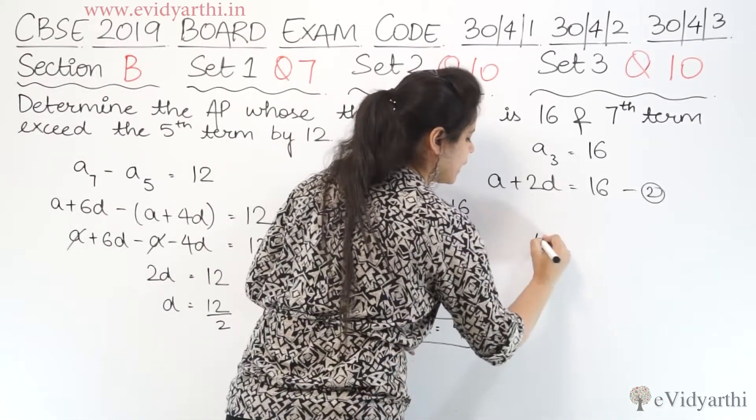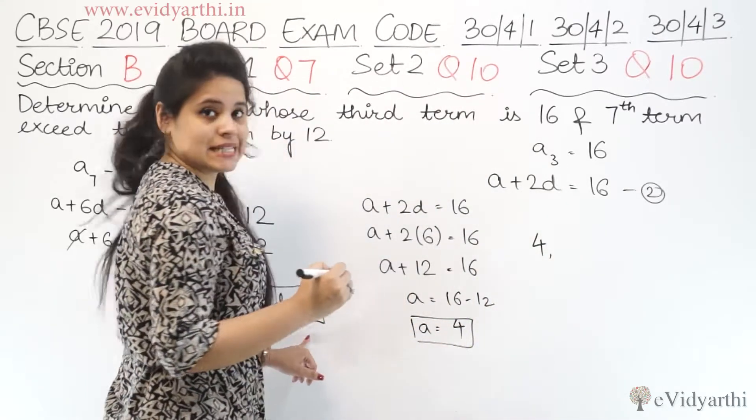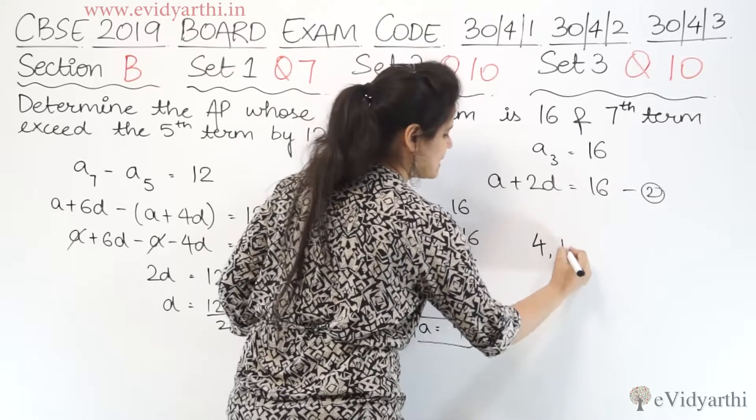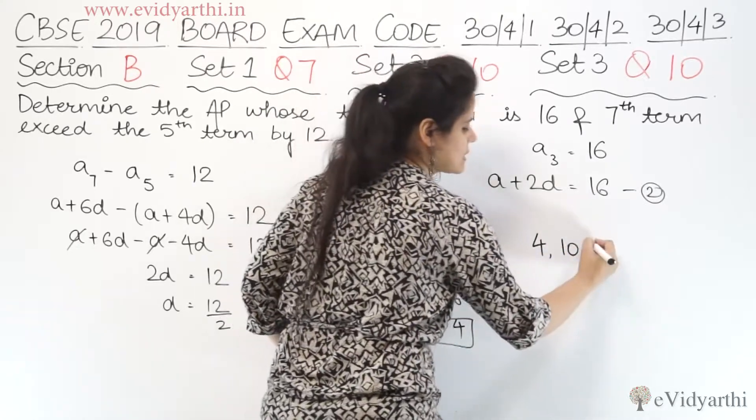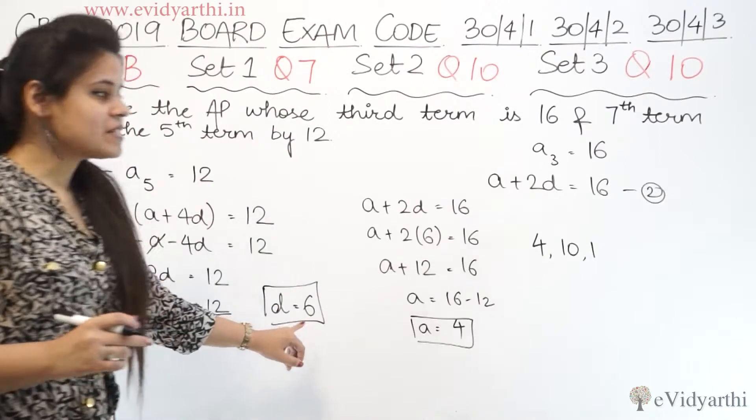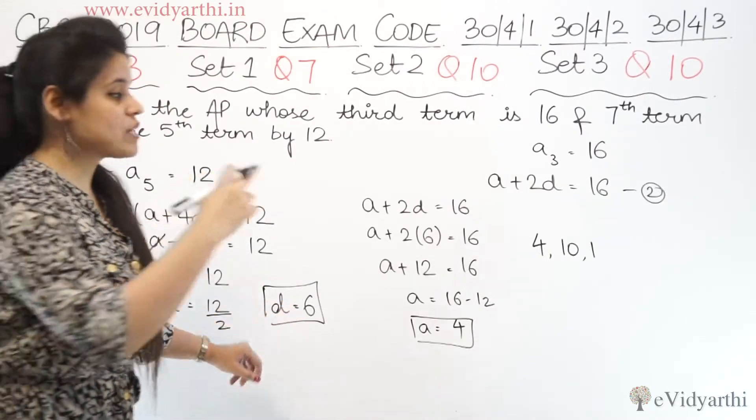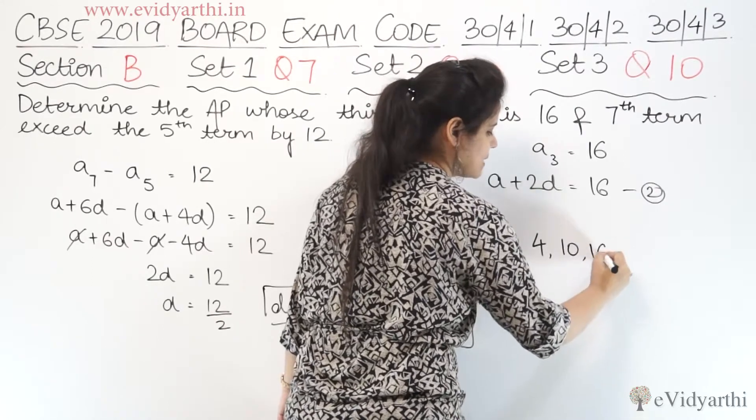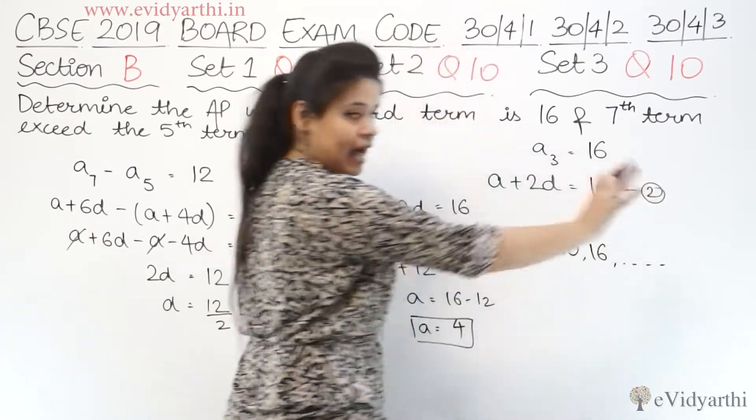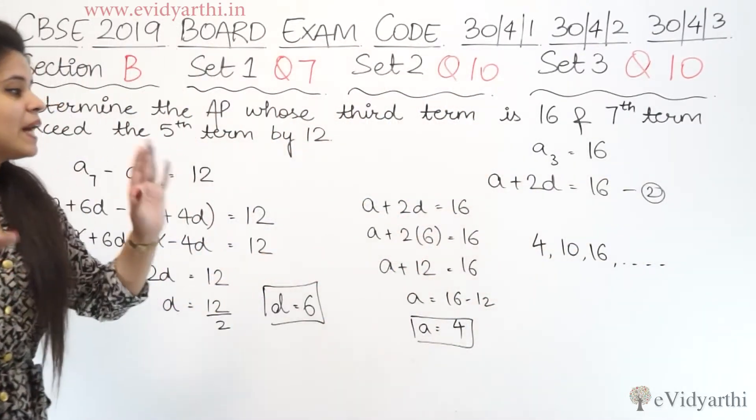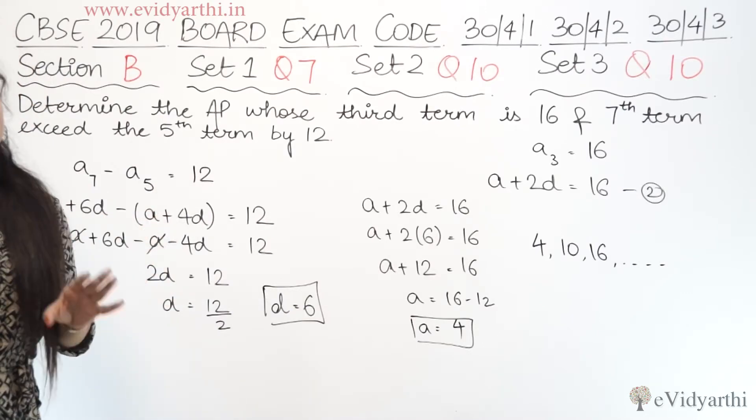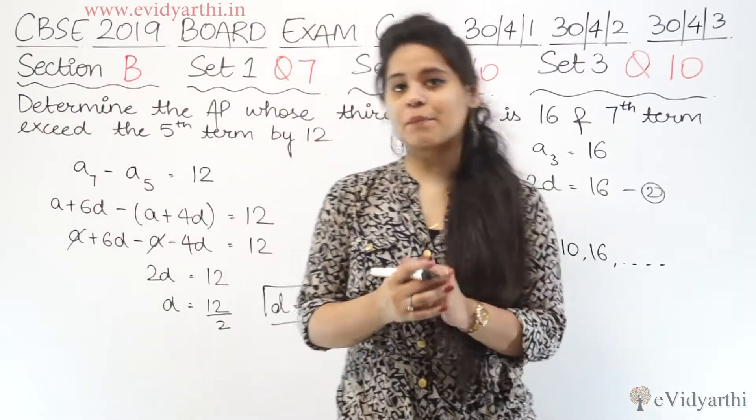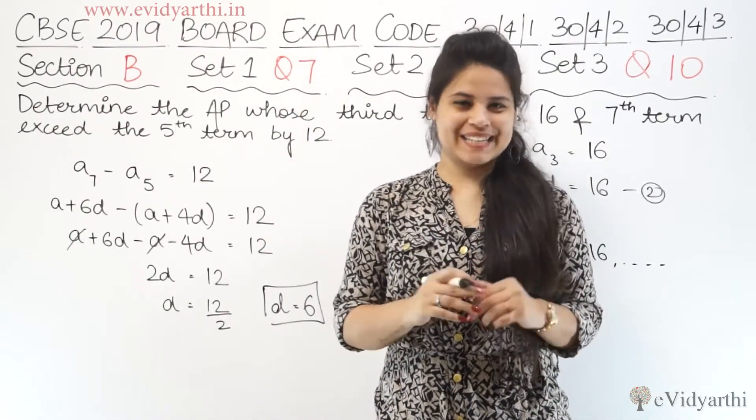So first term is 4. Common difference is 6. So second term will be 4 plus 6 which is 10. Then the next term, again common difference is 6, so we add 6 to 10 which gives 16. Similarly it continues. So our AP is 4, 10, 16 and so on. So this was the 7th question of set number 1 and 10th question of set number 2 and 3. Let's move to the next question.